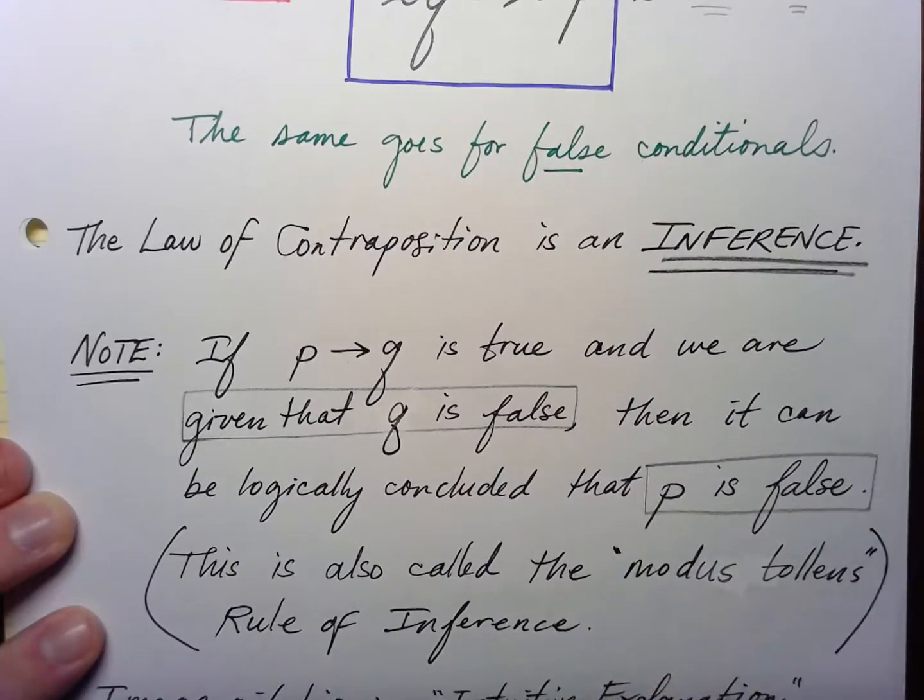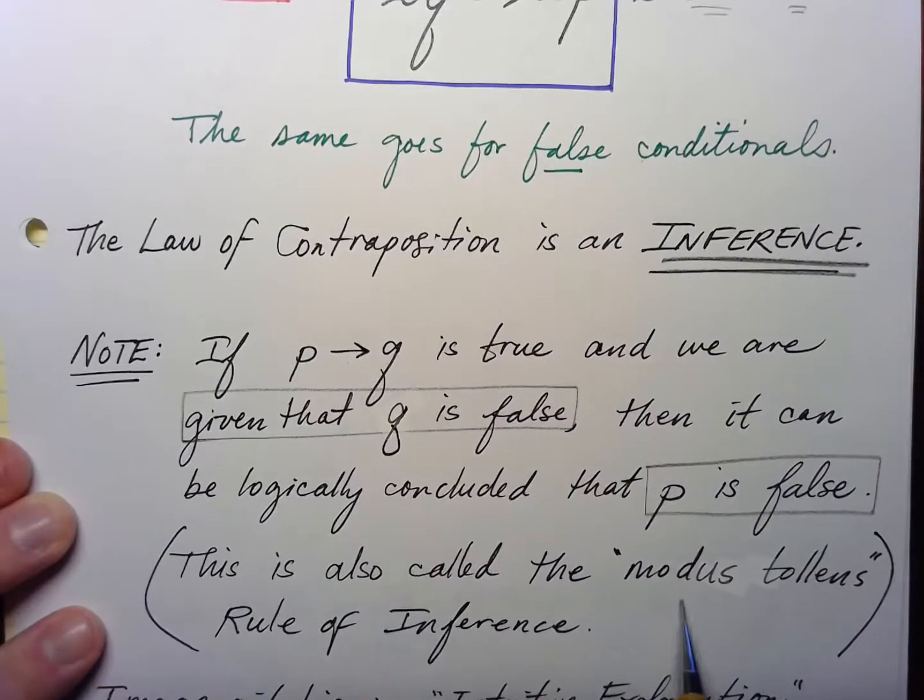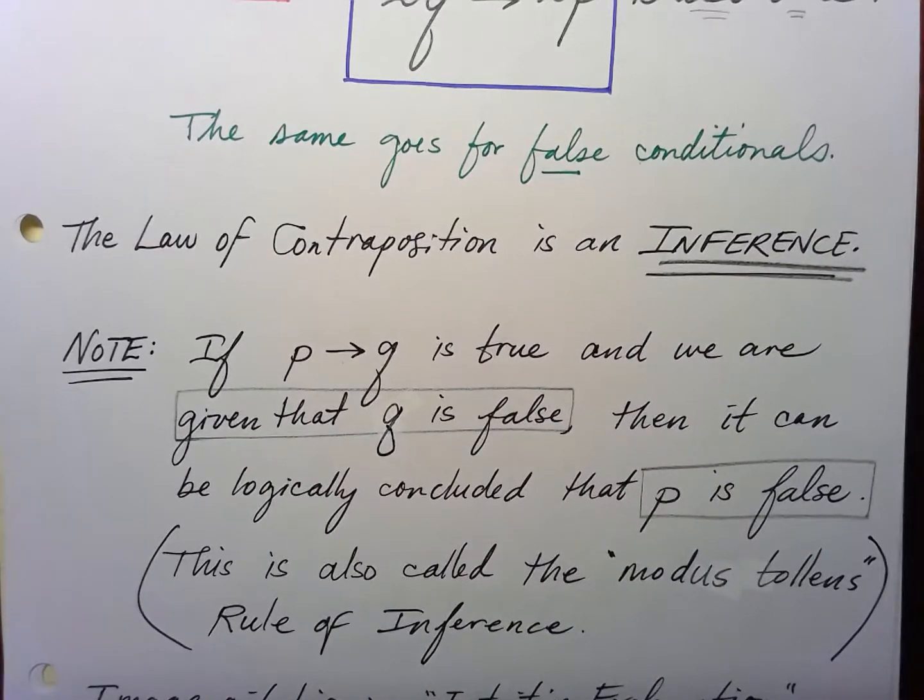This is an interesting thing to think about. This is also called the Modus Tollens rule of inference. It's a very, very old rule in logic.